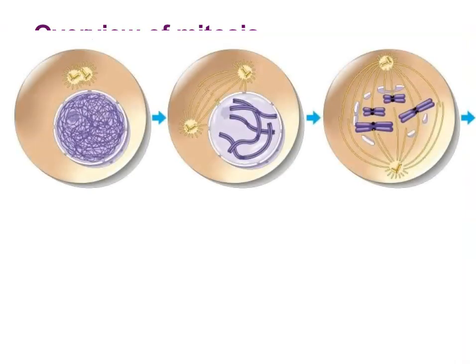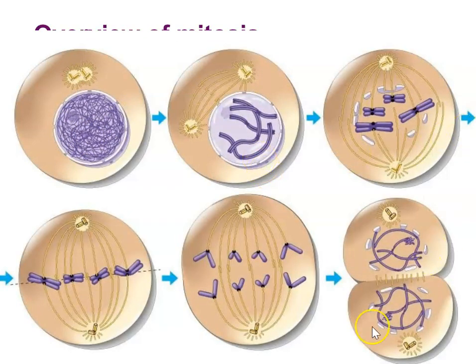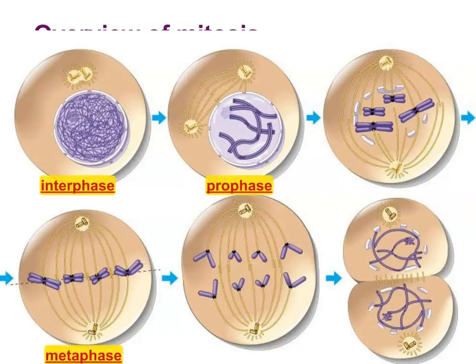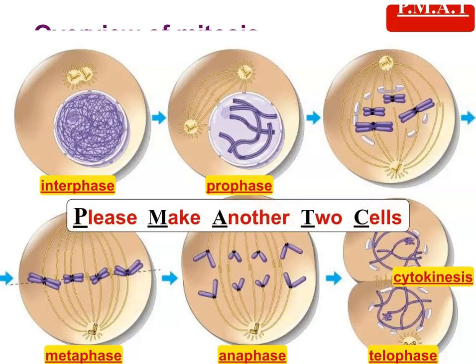So remember, the phases are: interphase, prophase, metaphase, anaphase, telophase, and cytokinesis. You can remember that as PMAT — a good way to remember the order. 'Please make another two cells' is another good way to remember the sequence. Notice that the phases happen in real time — it's a continuous process. We give them names so it's easy to describe what's going on, but cells can sometimes appear to be in between phases.